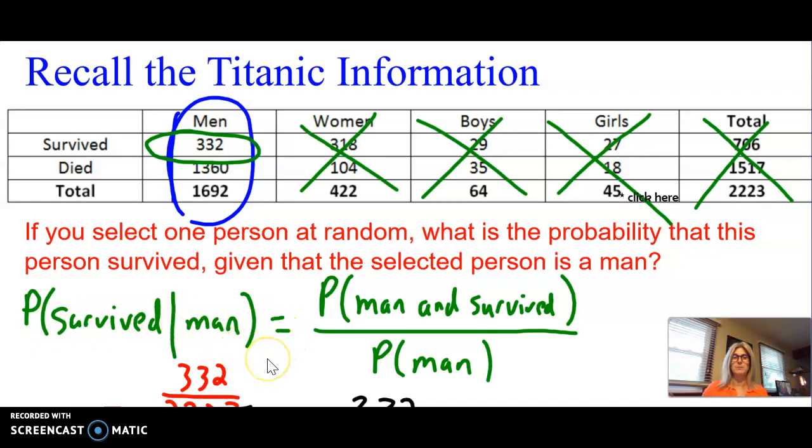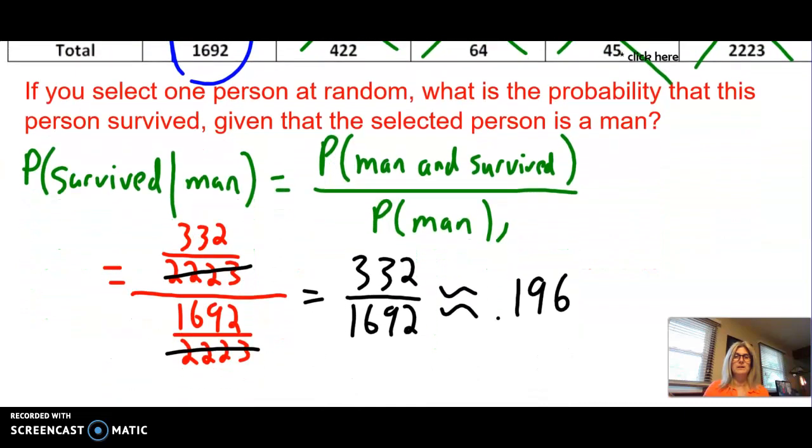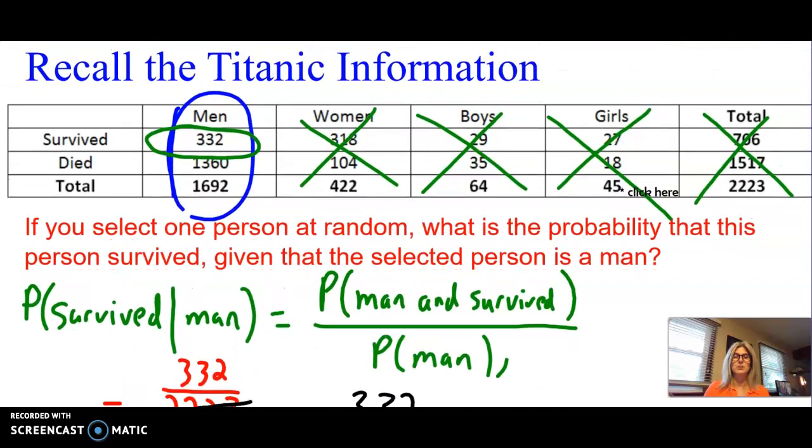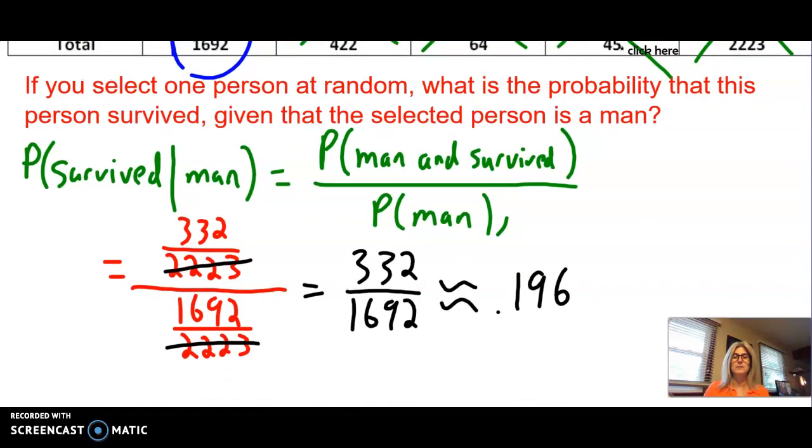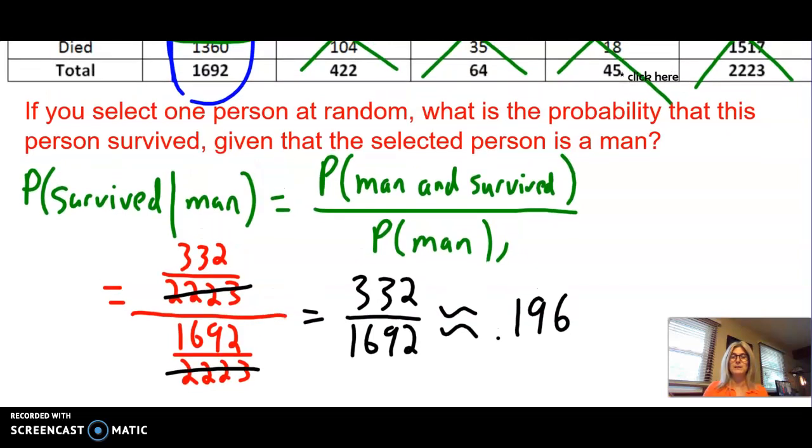We're going to have the probability of a man is down at the bottom. What's the probability of being a man? 1,692 out of the total. And what is the probability of a surviving man? That's where we get the 332 out of the total. So we have 0.196, which if we wanted to write it as a decimal, that would be 0.196. As a fraction, we have it already, but as a percent, you'd move that decimal over two places to the right and have 19.6%.